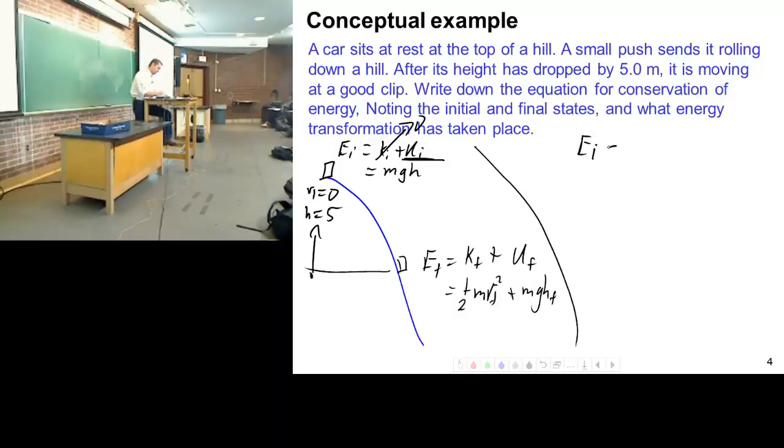The equation is energy initial equals energy final. Okay, what's my initial state? mgh initial, right? What's my final state? It's 1 half mv final squared plus mgh final. There's my equation. What do I see happen?